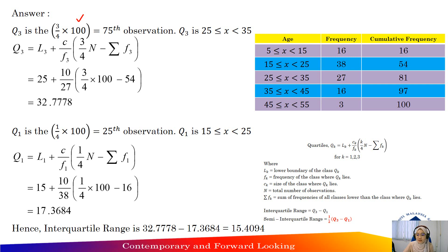So 75th lies here in cumulative frequency at 81. And then, refer to the class interval, x greater than or equal to 25, less than 35. So the class interval for Q3 is here. Based on this class interval, find the Q3 using formula.